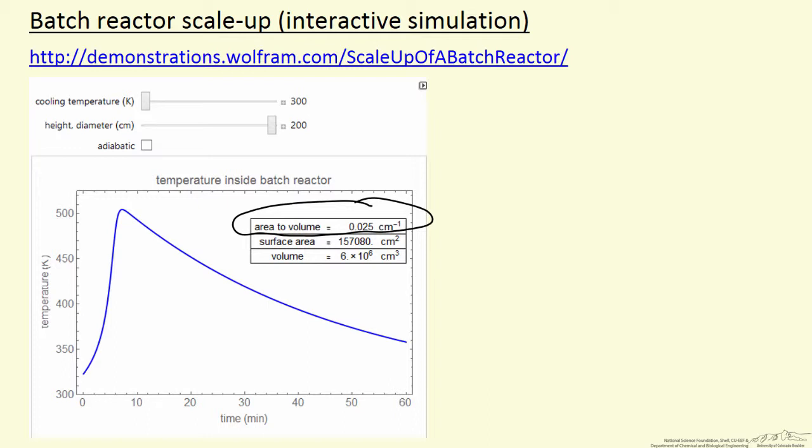The main reason is that we're changing this area to volume ratio. So as the reactor gets bigger, the area goes up much slower than the volume, and the area is where heat transfer is occurring. This simulation will now show how changing these two parameters changes the behavior of the reactor.